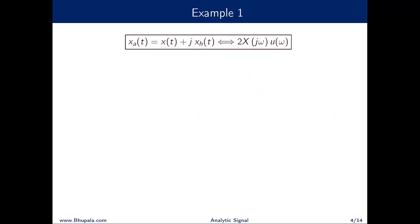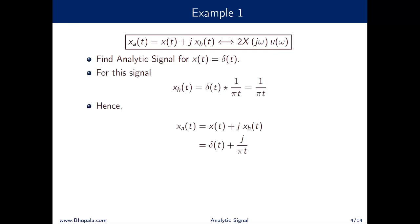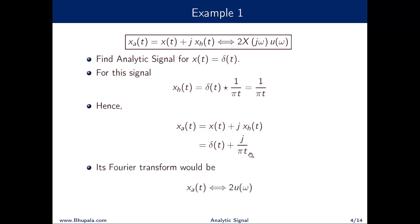As a first example, let us take x(t) = δ(t). The Fourier transform of δ(t) is just 1. The Hilbert transform is given by x_h(t) = δ(t) convolved with 1/πt. Since convolution of any signal with the Dirac delta gives the same signal, the Hilbert transform equals 1/πt. The analytic signal is then x(t) + j·x_h(t) = δ(t) + j/πt.